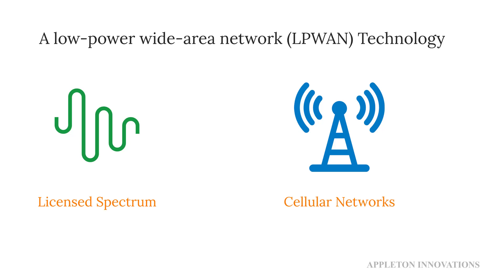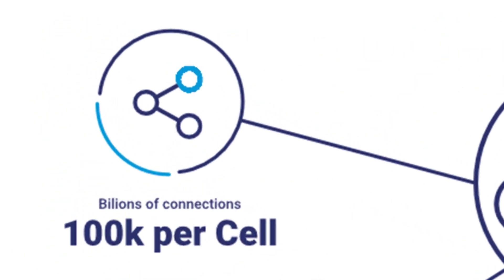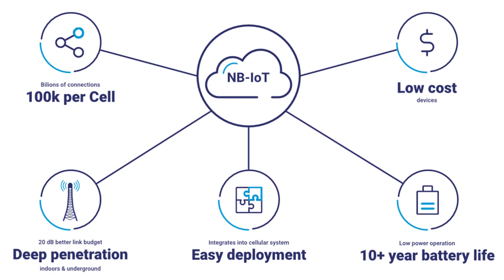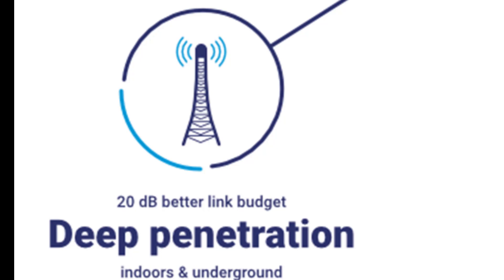NB-IoT uses existing cellular networks. The key benefits include supporting more than 100,000 connections per cell. A cell is a geographic area covered by a single base station in a cellular network. NB-IoT was also designed to offer 20 decibels of coverage improvement, enabling deep penetration into indoor places.